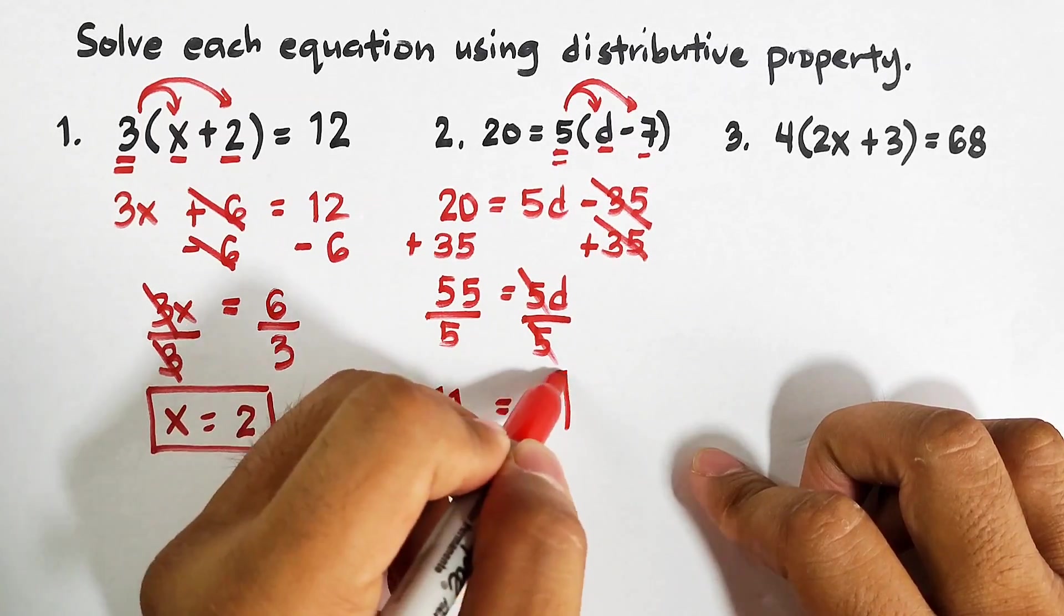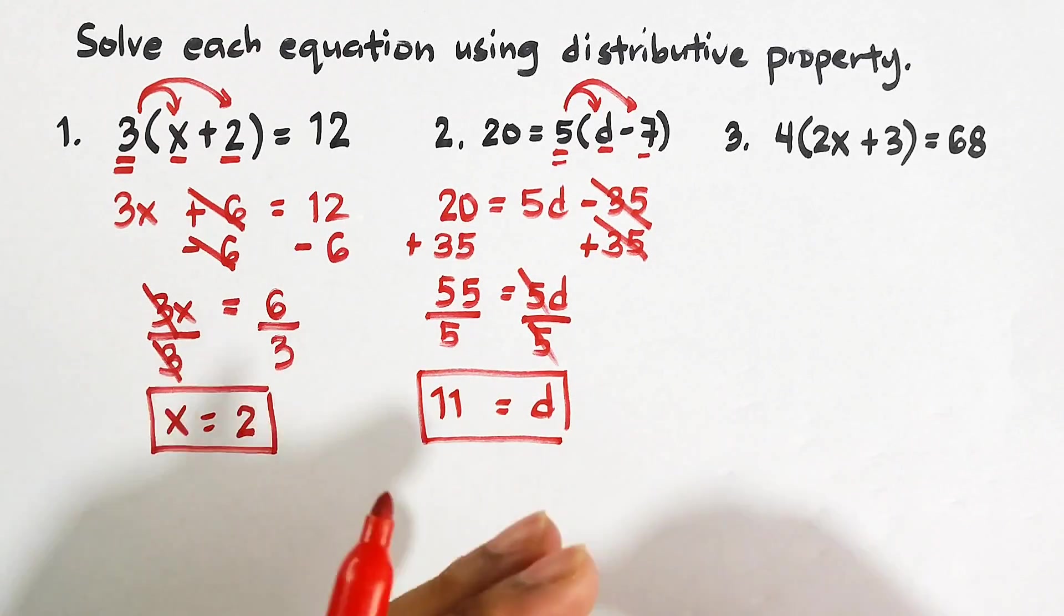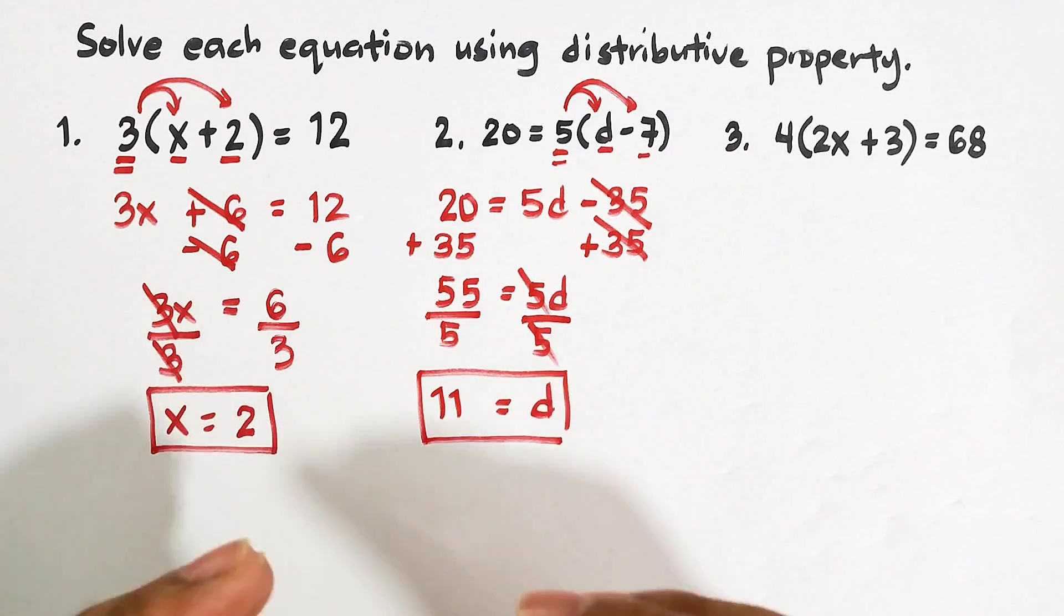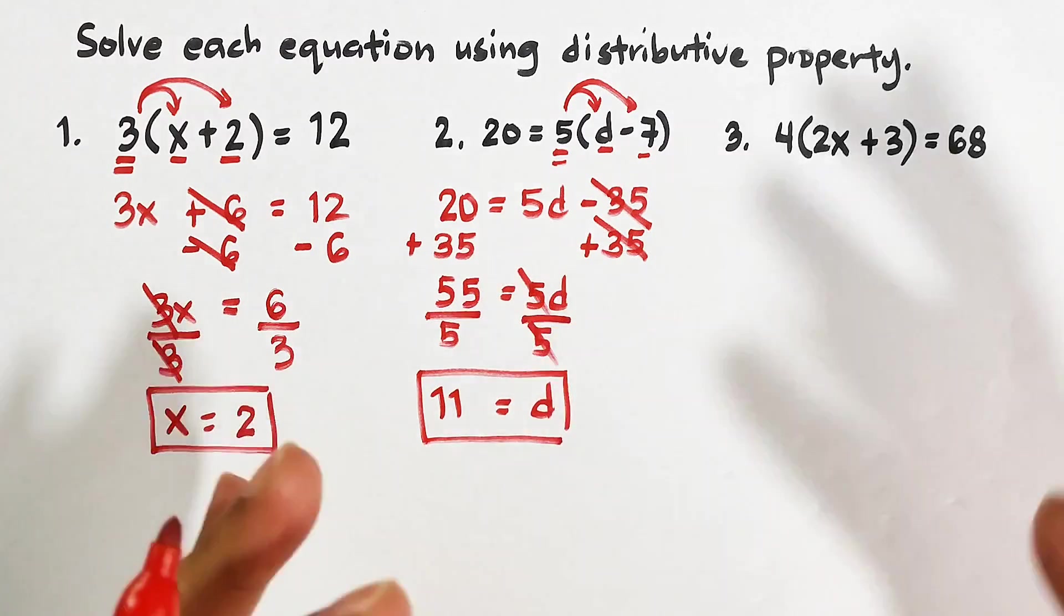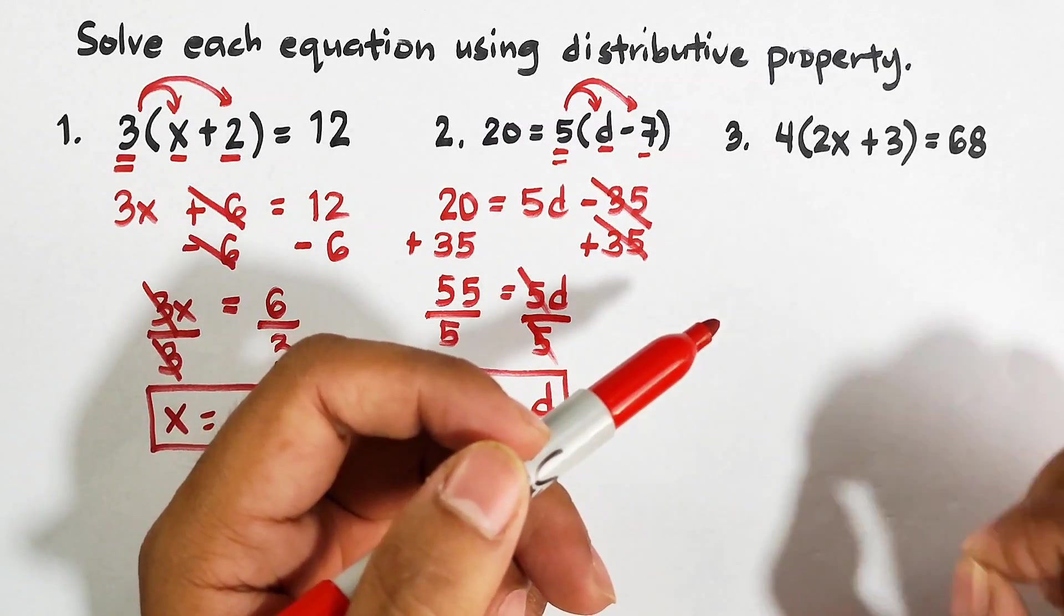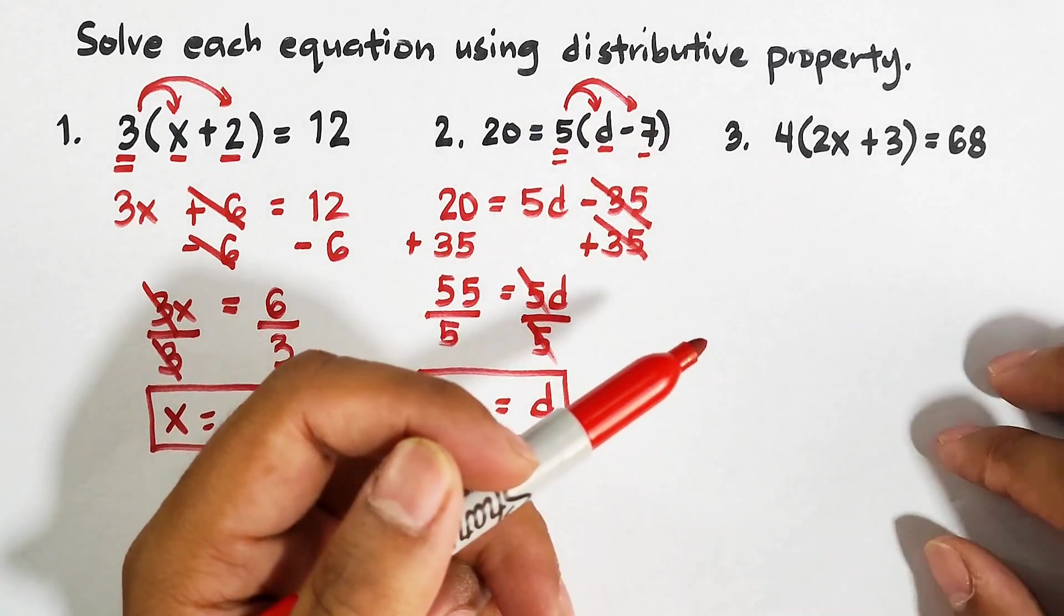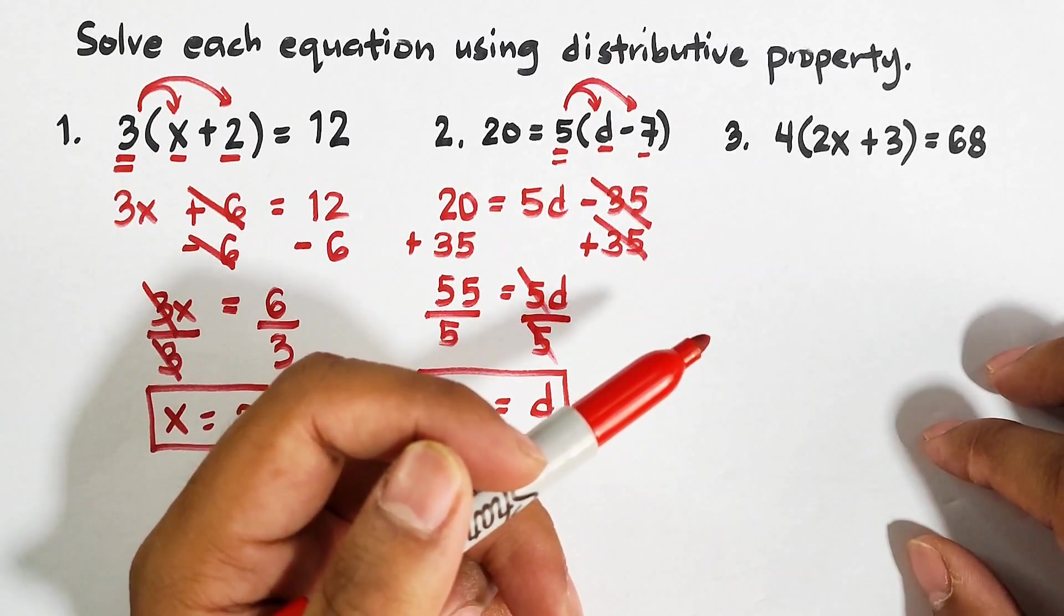And that is simply 11. As you can see, as simple as that we're using distributive property to solve each equation. Now by the way guys, the purpose of the distributive property is to simply eliminate the grouping symbols, and it is patterned with the operations on numbers.